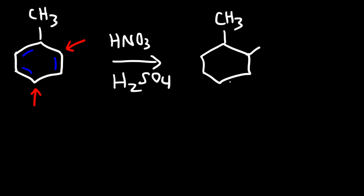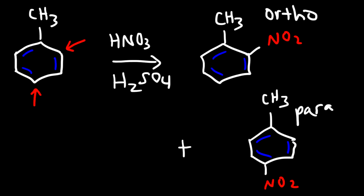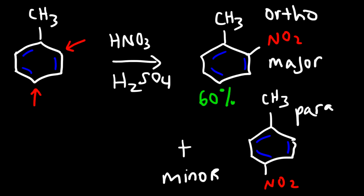We're going to get a mixture of products - we can get the ortho product and we can also get the para product. Which of these two will be the major product? It turns out that you get a good mixture of both, but not an equal 50/50 mixture. The ortho product will exceed the para product - the ratio is about 60% ortho and 40% para. Because the methyl group is not bulky, it favors the ortho product over the para product.